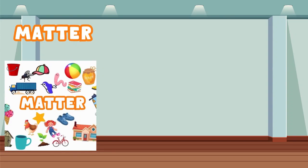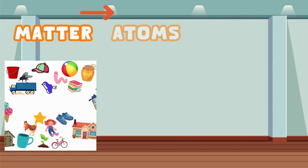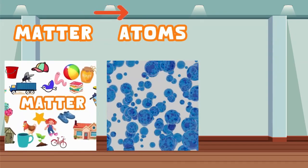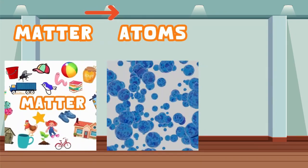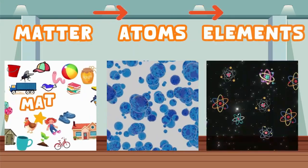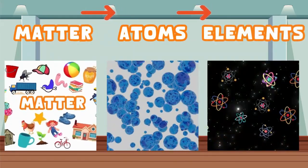Each different atom is called an element. Let's recap all that: all matter is made from atoms. Atoms are the building blocks of matter, and inside matter there are different kinds of atoms, and we call them elements.